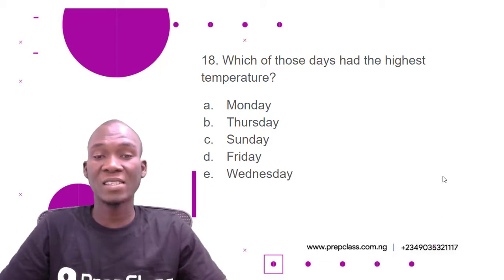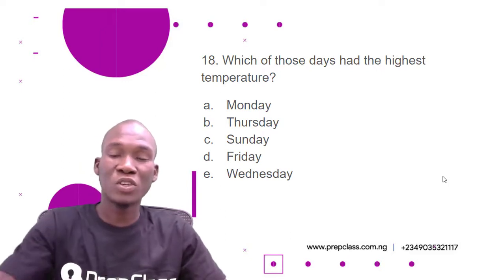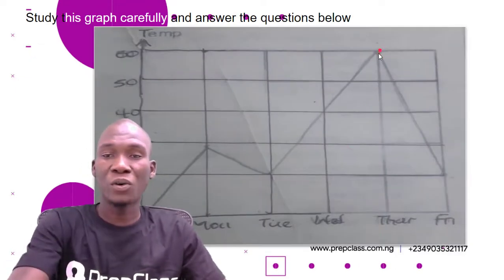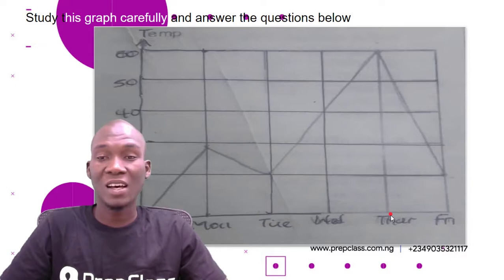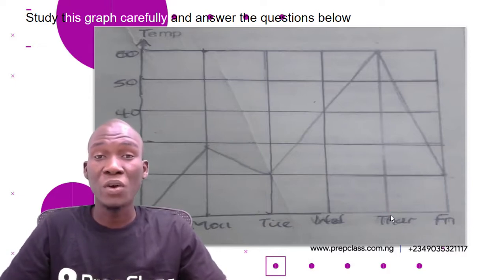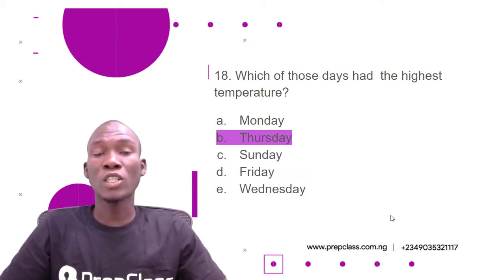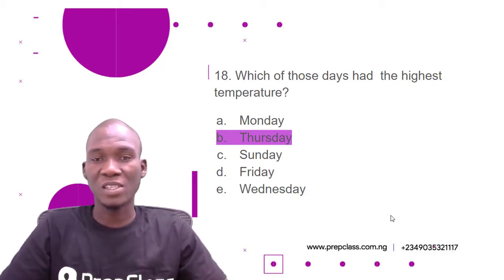Question number 18: Which of those days had the highest temperature? Options: A) Monday, B) Thursday, C) Sunday, D) Friday, E) Wednesday. From the graph, the highest temperature is 60, and the day with that temperature is Thursday. So the answer is Thursday, option B.